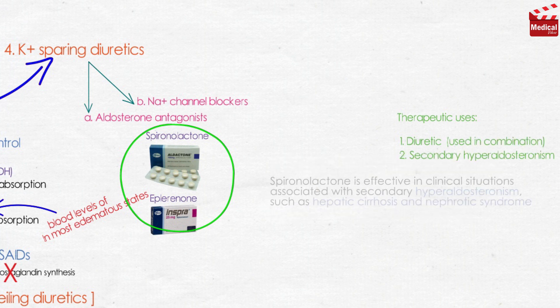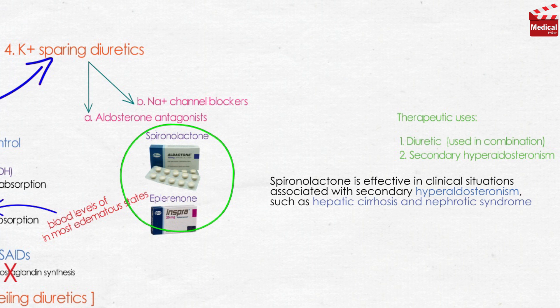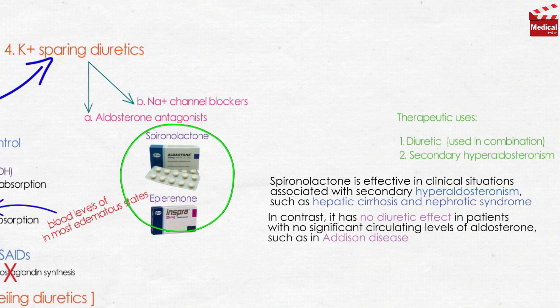Spironolactone is effective in clinical situations associated with secondary hyperaldosteronism, such as hepatic cirrhosis and nephrotic syndrome. In contrast, it has no diuretic effect in patients with no significant circulating levels of aldosterone, such as in Addison's disease.